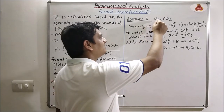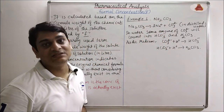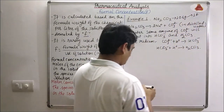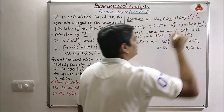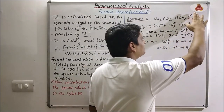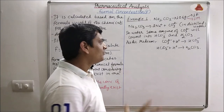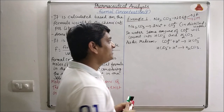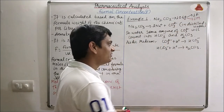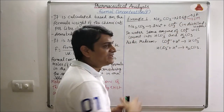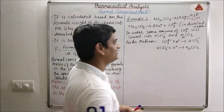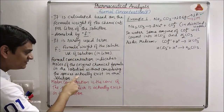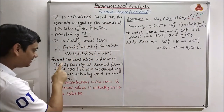If we have taken 106 grams of Na2CO3 in one liter at the start, it will be one formal as well as one molar at the start. But after this reaction, it will remain one formal, but it will not be one molar because the concentration of species has changed. In formal concentration, we do not consider the species actually existing in the solution.